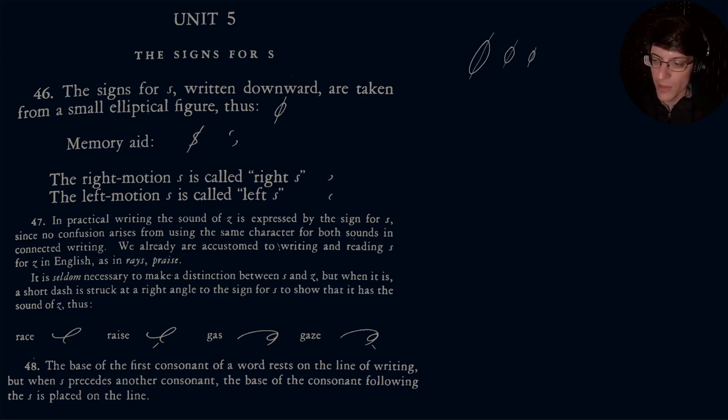It is seldom necessary to make a distinction between S and Z, but when it is, a short dash is struck at a right angle to the sign for S to show that it has the sound of Z.